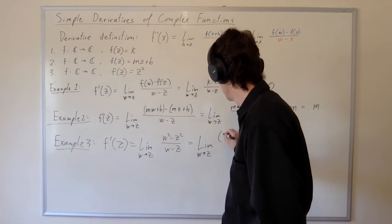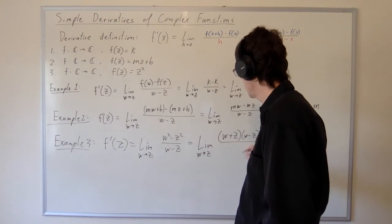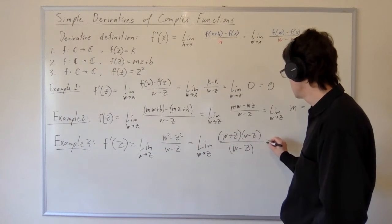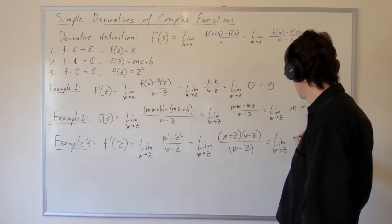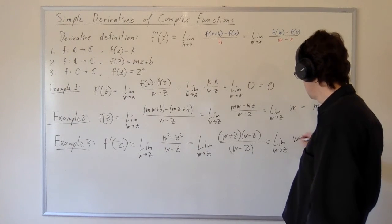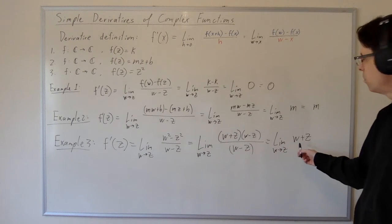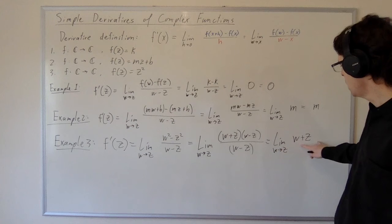But never mind that. So w plus z, w minus z, factoring the difference of two squares, w minus z, and then of course we'll cancel these terms. So that's the limit as w approaches z of w plus z. I'm going to split this limit, but I want you to be aware here that when I split this limit of a sum, what I'm using is a sum law for limits.